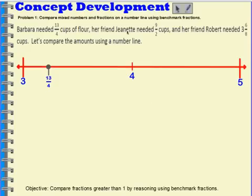Let's try the next number, the amount that Jeanette needed: 9 halves. When I think about 9 halves, I have to think about where that would be on our number line. 2 halves would be 1, 3 halves would be 1 and a half, 4 halves would be 2, 5 halves would be 2 and a half, 6 halves would be 3, 7 halves would be 3 and a half, 8 halves would be 4.